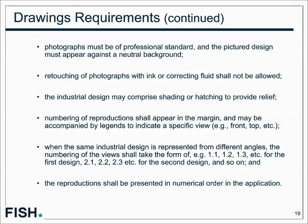Matters shown in the reproduction but for which protection is not sought can be indicated in the textual description, or by dotted/broken lines, or by coloring. Photographs must be of professional standard against a neutral background; retouching with ink or correcting fluid is not allowed. The industrial design may comprise shading or hatching to provide relief, and the numbering of reproductions must appear in the margin. Figures may be accompanied by legends such as 'front view' or 'top view.' When the same design is represented from different angles, numbering takes the form 1.1, 1.2, 1.3 for the first design, 2.1, 2.2, 2.3 for the second design, and so on. Reproductions must be presented in numerical order.